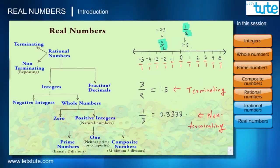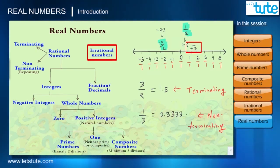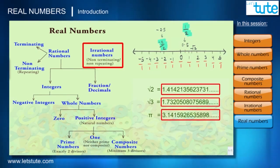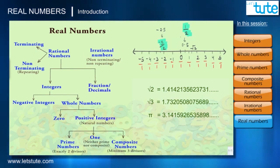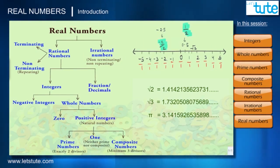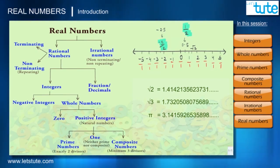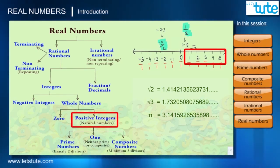For example, between the numbers 1 and 2 we have the number √2, which can't be expressed as a ratio of two integers. These types of numbers are called irrational numbers. Note that the decimal form of all irrational numbers is non-terminating and non-repeating. Rational numbers and irrational numbers together form real numbers. So under rational numbers we have whole numbers, integers, prime numbers, and composite numbers. Every point on the number line is considered a real number.